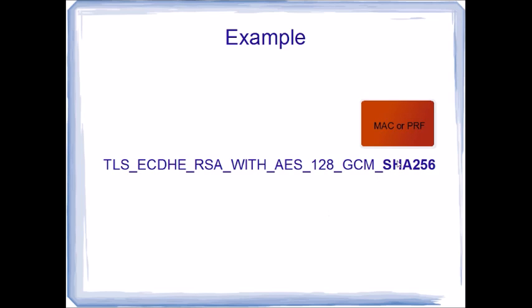And finally, for the part of the handshake that requires a MAC or a pseudorandom function, this identifies what algorithm is going to be used to produce the hash used in the MAC or the pseudorandom function.